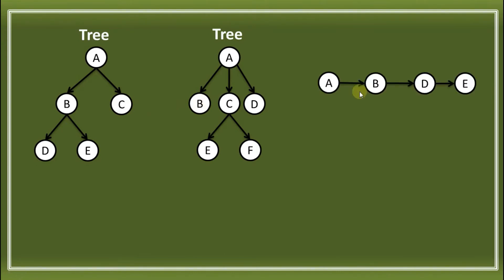Let's have another example. Is this a TREE? Yes, that is a TREE again. So, why is it a TREE? Because if you look at it, it's like a linked list — si A can have more subordinates.